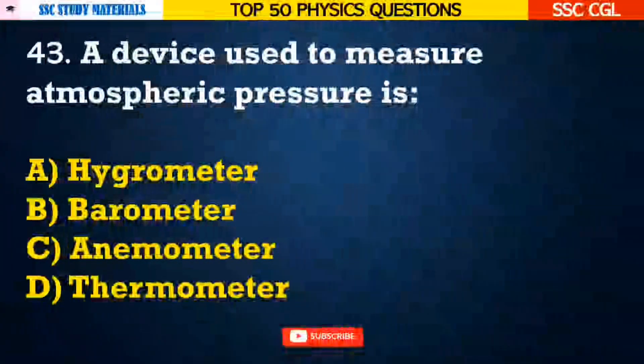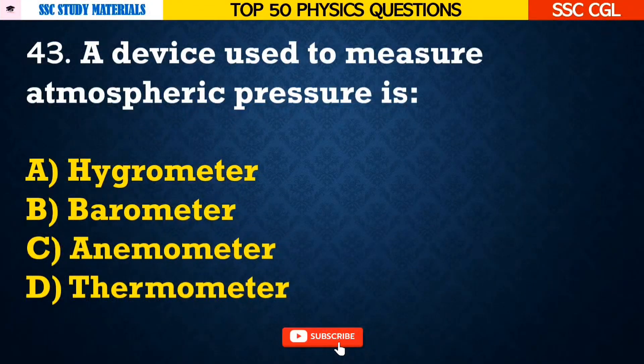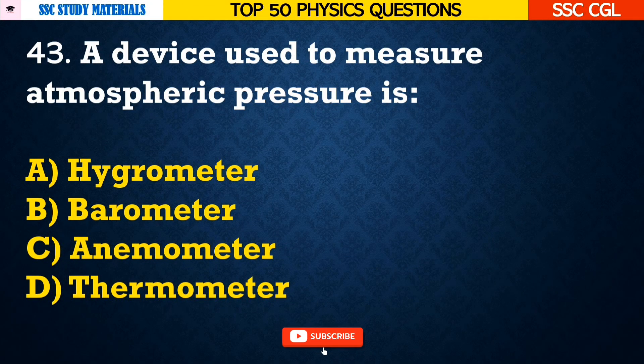Question number 43: A device used to measure atmospheric pressure is — Answer B. Barometer.